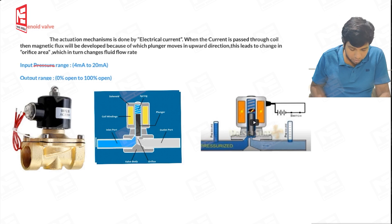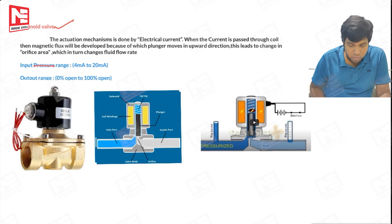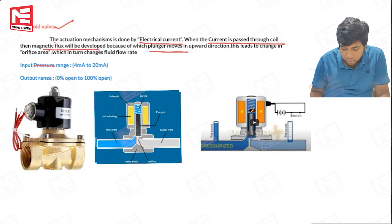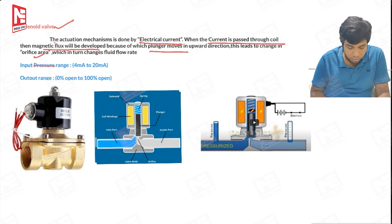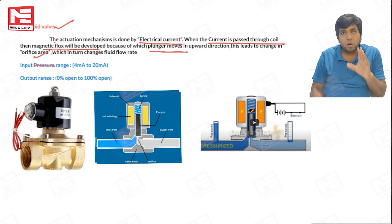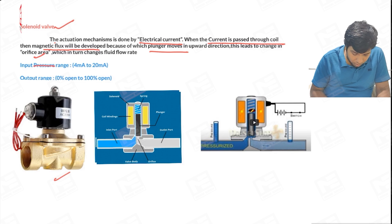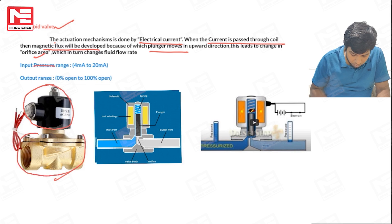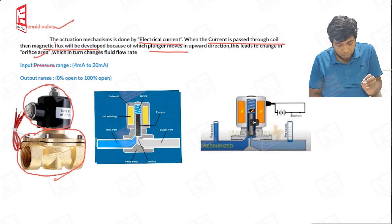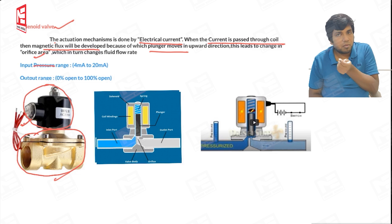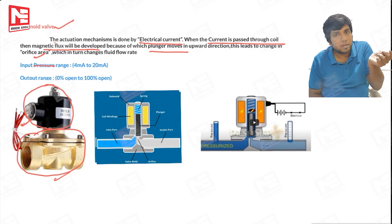The solenoid valve is an electrically actuated valve. The actuation mechanism is done by electrical current. When current is passed through the coil, magnetic flux is generated which moves the plunger upward — this changes the orifice area and in turn changes the flow rate. When you buy a solenoid valve it has an upper actuating body and a lower control valve body, with two electrical wires that can be plugged into a socket.